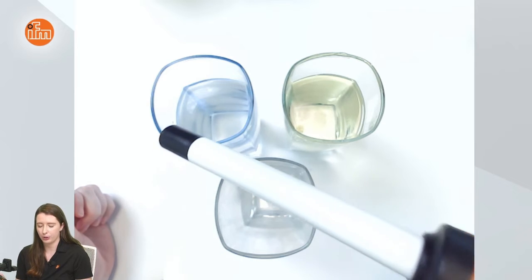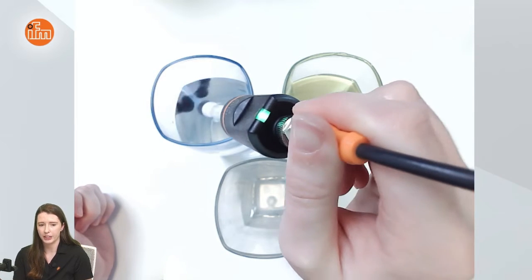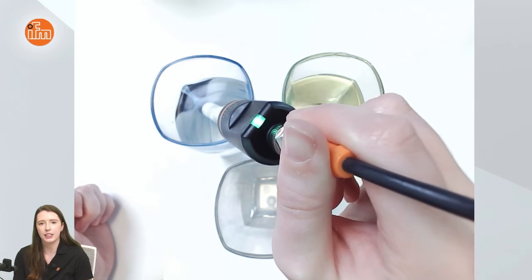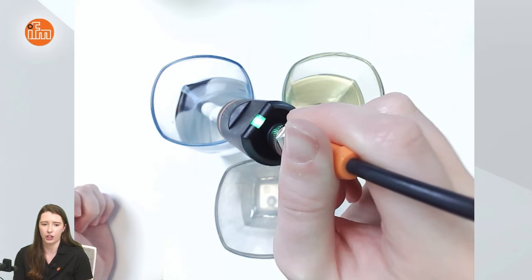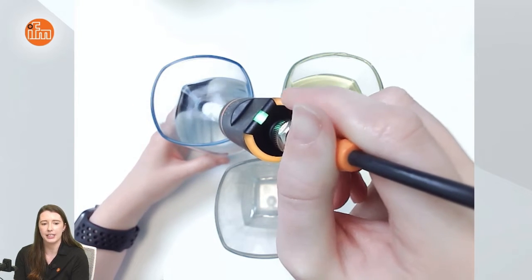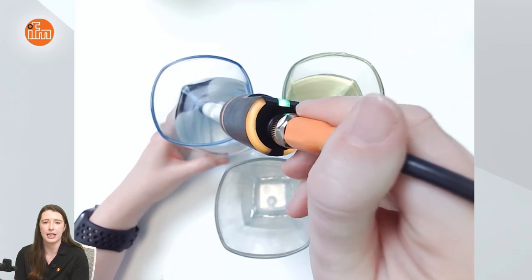So to begin I'm going to put the sensor into the glass of water. As you can see the status LED still does not change because the glass is not grounded to earth. As soon as I touch the glass and ground it you can see the yellow status LED change.